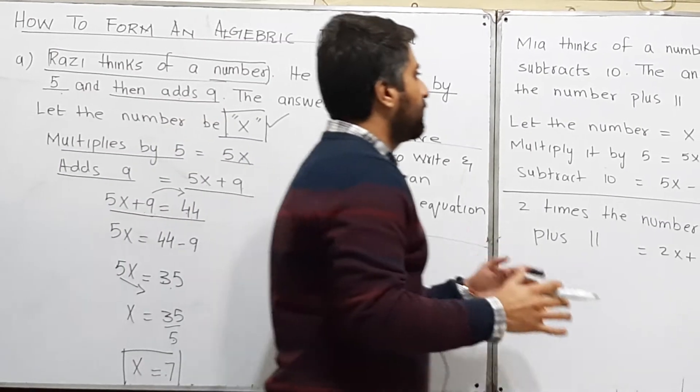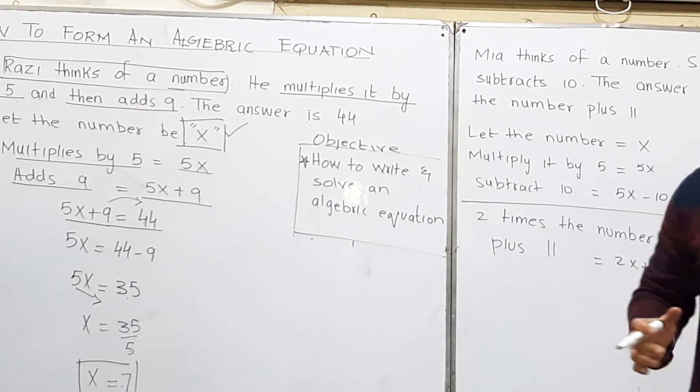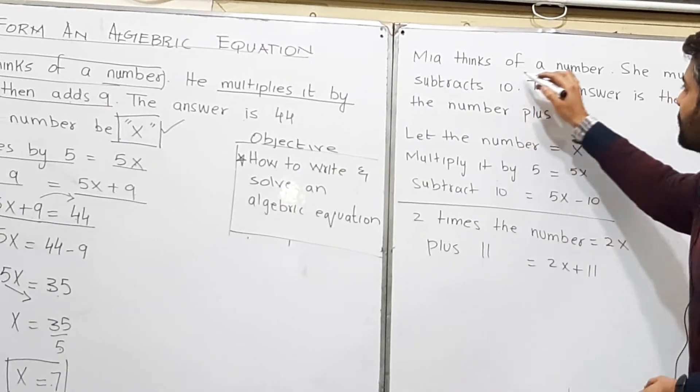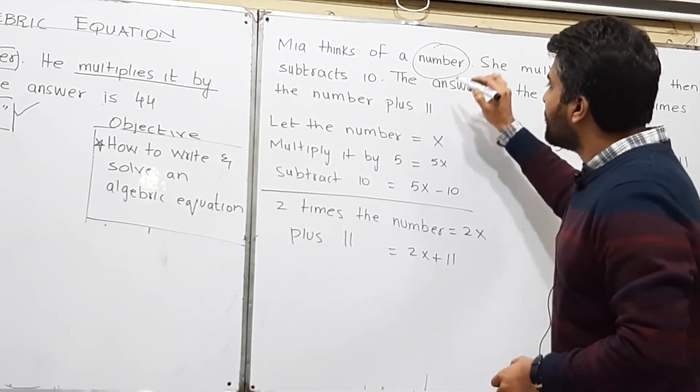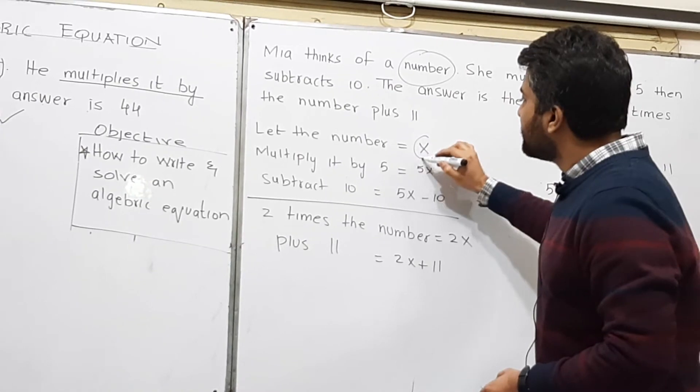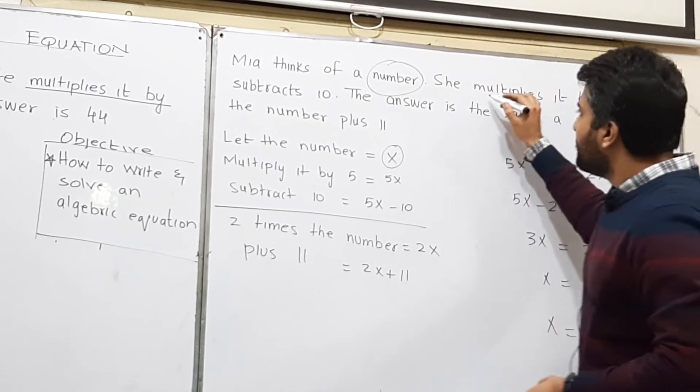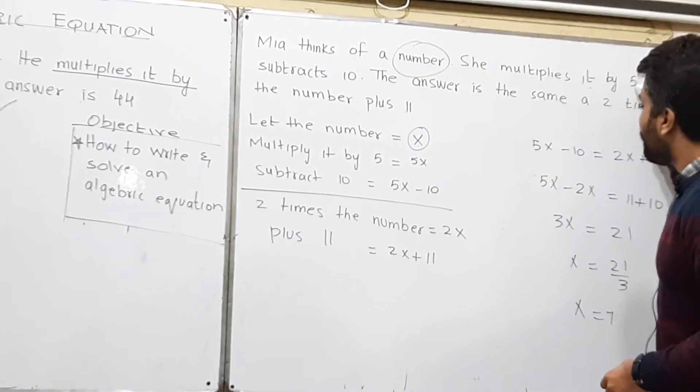Consider a second example. Mia thinks of a number. Again we do not know about the number, so I will take it as x. She multiplies it by 5.